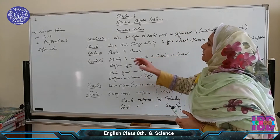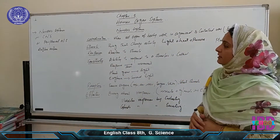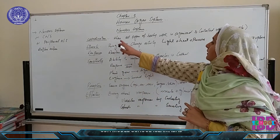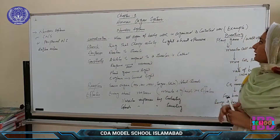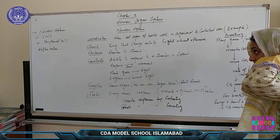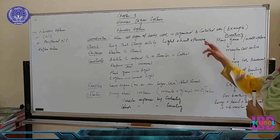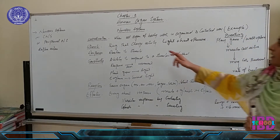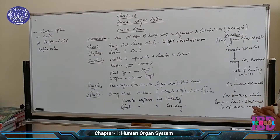First of all, we will discuss about the nervous system. To discuss this, we should know the different definitions and terms. The first term is coordination: when all organs of the body work in an organized and controlled way. I am giving you an example of how all organs of the body work in an organized way.